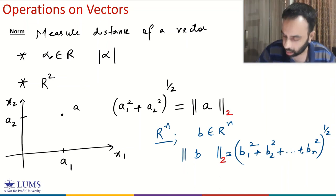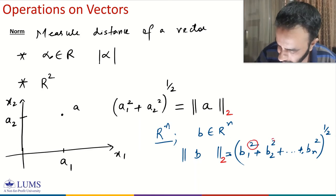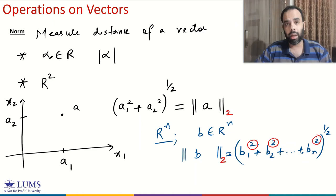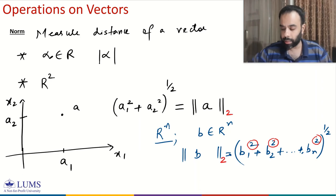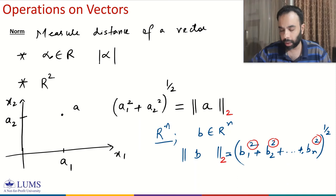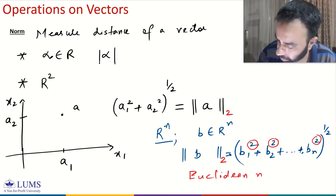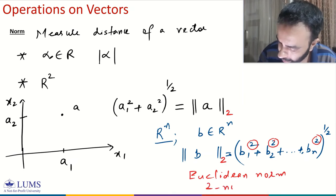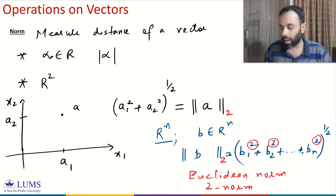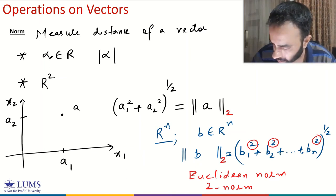This subscript 2 represents the 2 in the definition of the norm. We will see shortly that we can use some other number greater than or equal to 1 instead of 2, and changing that number gives a different definition of norm — but it is still a norm that quantifies the distance of a vector from the origin. This definition is called the Euclidean norm or 2-norm, because we are measuring Euclidean distance, and the 2 indicates the squaring and the square root (power 1/2).